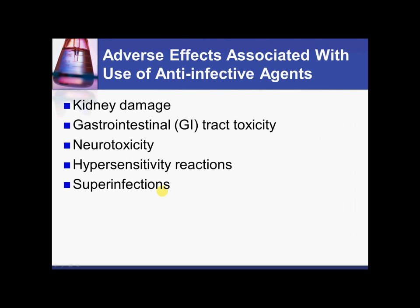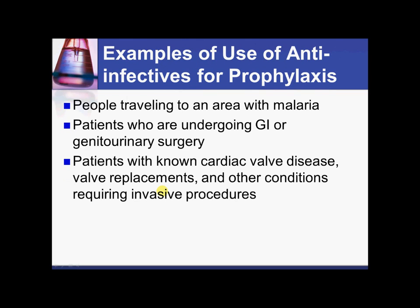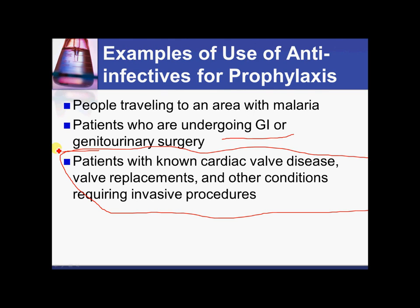Now we're going to look at putting patients on antibiotics to prevent an infection — prophylactic use. For example, patients going into GI surgery: there is a lot of E. coli in the GI tract, and when the GI is opened there's a possibility bacteria could escape. Also, patients undergoing certain dental procedures — for instance, a patient who has had a heart valve replacement, since there are many gram-positive bacteria in the mouth that could enter the bloodstream during dental work and potentially affect the heart. IV drug users are another group that can have complications.